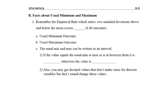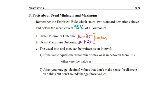Since we've been talking about means and standard deviations, it leads to the discussion of usual maxes and mins. If you remember back in chapter three, we talked about the empirical rule, which says if you go two standard deviations above or below the average, you've got 95% of your outcomes encompassed. The definition for a usual minimum value is the mean minus two standard deviations, and for a usual maximum it's the mean plus two standard deviations.